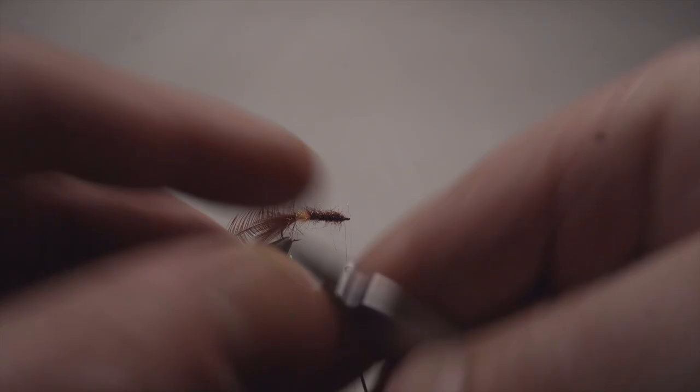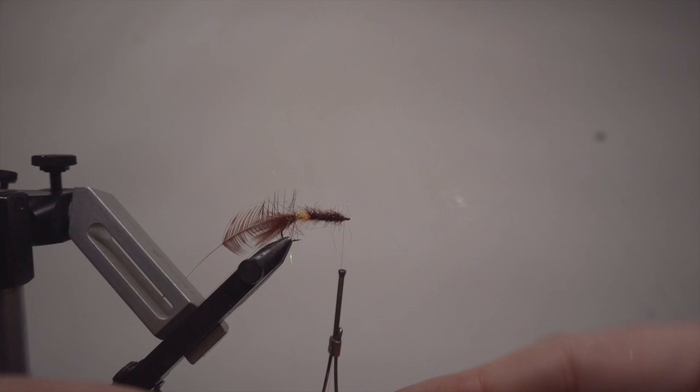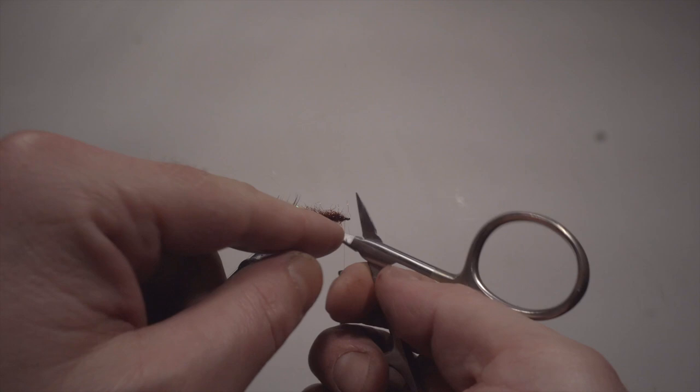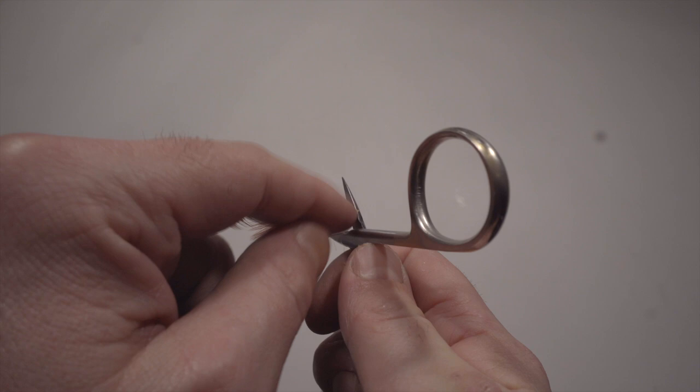So what I'm going to do now is I'm going to duplicate the hackle by taking my scissor, opening it up. You have the cutting part and then you have the other sharp edge in here, the 90 degree angle. That's the part we're going to put towards the hackle.